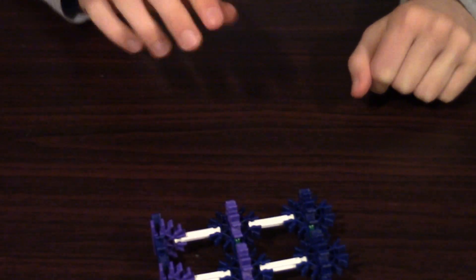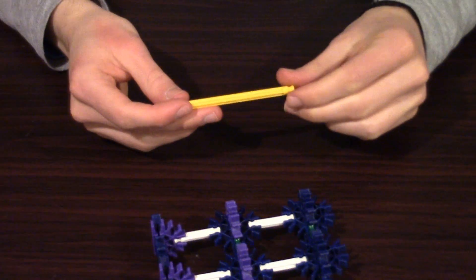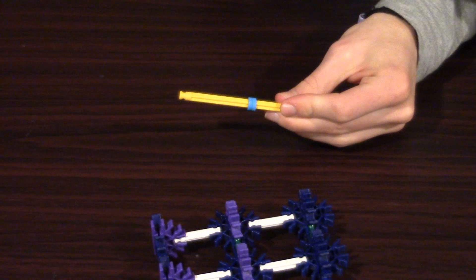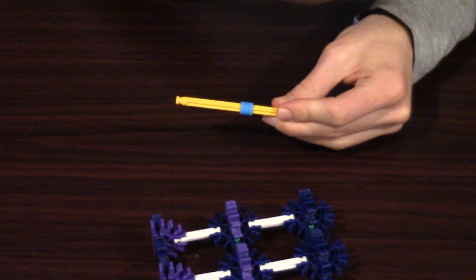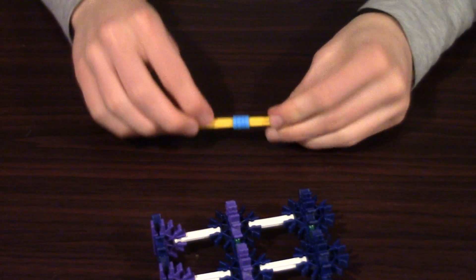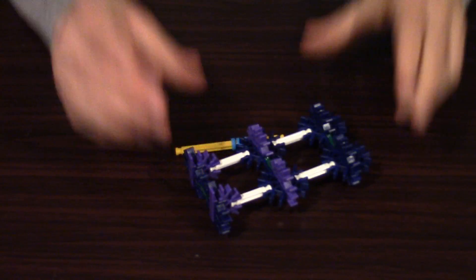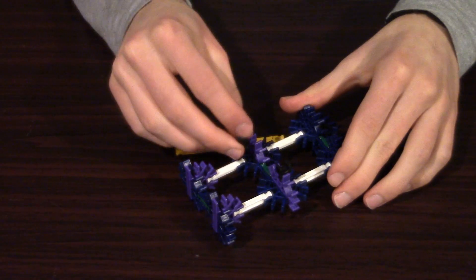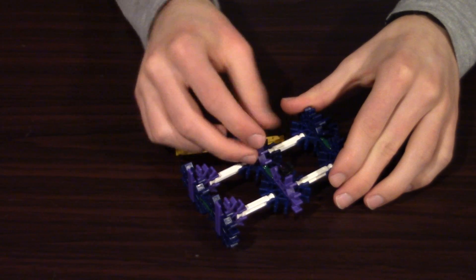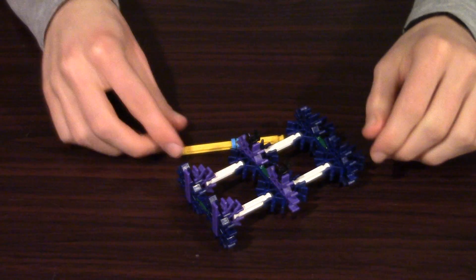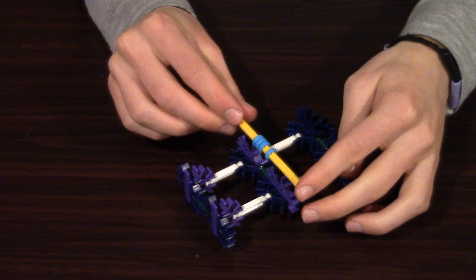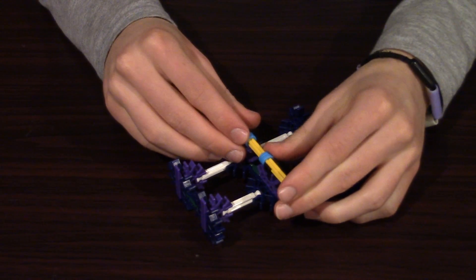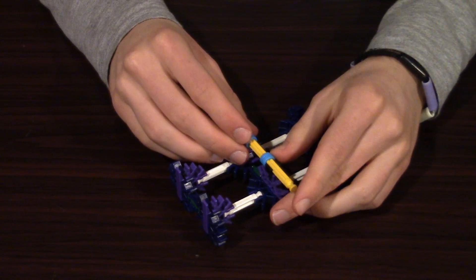The next thing you're going to do is take one of the yellow rods and put four light blue spacers on it. And then you're going to take two of these black pieces, and stick them in the top opening of the purple connectors. And then stick the yellow rod in them like this.